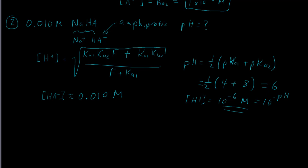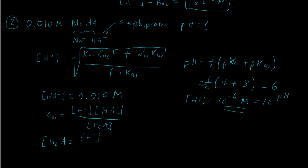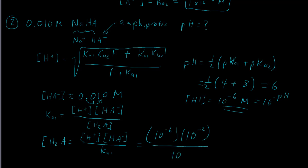To find the other species concentrations, we use the Ka expressions. Ka1 equals the H+ concentration times the HA- concentration divided by H2A. Solving for H2A: it equals the H+ concentration times HA- concentration divided by Ka1. The H+ is 10⁻⁶, the HA- is 0.01 which is 10⁻², and Ka1 is 10⁻⁴.